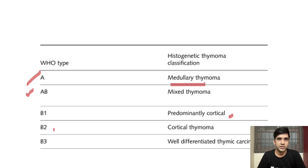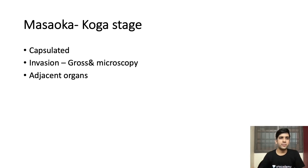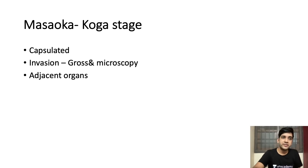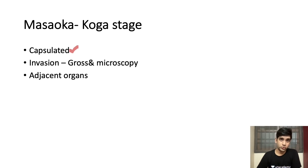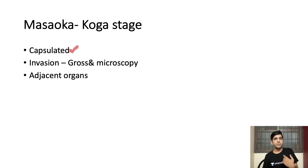Like any other cancer, thymoma also falls under TNM staging classification. Before TNM, we had the Masoka-Koga staging system, which was used previously and upon which the TNM classification was based. As of now, we use only TNM for thymomas. The old Masoka-Koga system was based on the capsule of the tumor — whether it is encapsulated or not, in gross and microscopy, and the invasion of the capsule and adjacent organs — to predict prognosis and staging. This is no longer used, but remember the name Masoka-Koga, as it has been in use for many years.